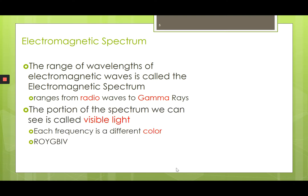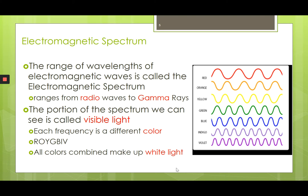Now, there is a portion of the spectrum we can see, and that's known as visible light, which allows us to have different colors. The colors of the electromagnetic spectrum are ROY-GBIV: red, orange, yellow, green, blue, indigo, and violet. When we add all these colors together, we get white light.